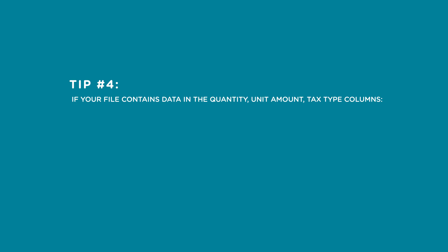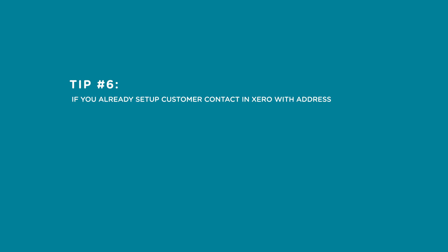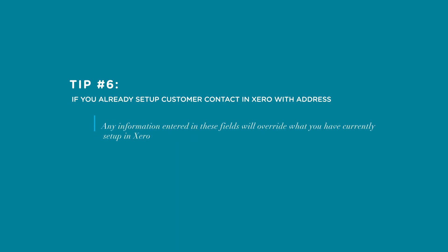Tip four: if your file contains data in the quantity, unit amount, or tax type columns, you must leave the total and total amount columns empty — Xero will make the calculations for you. Tip five: if you have already set up customer contacts in Xero, be sure to enter the customer contact name exactly as it appears in Xero, otherwise Xero will assume it is a new contact. Tip six: if you have already set up the customer contact in Xero with an address, there is no need to complete the address fields unless you want to make changes, as any information entered will override what is currently in Xero.